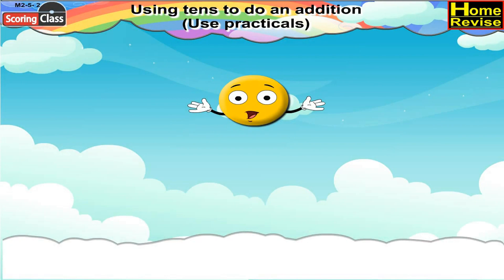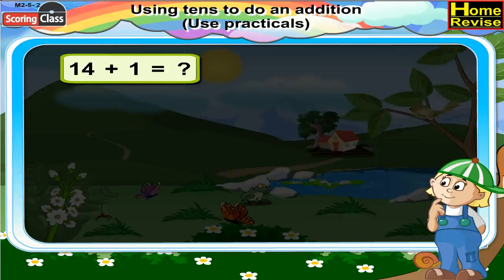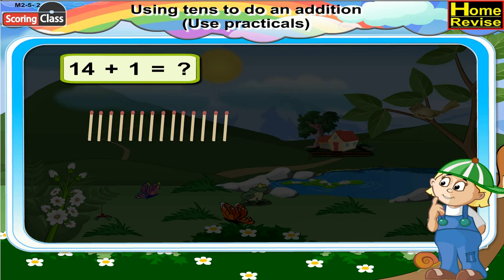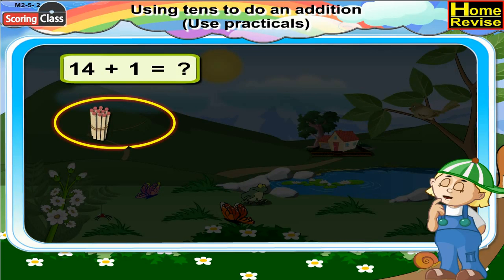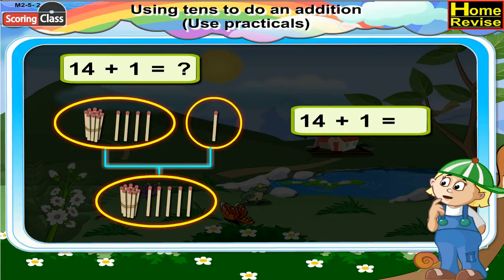Using 10s to do an addition. 14 plus 1 is equal to how many? Let us take 14 matchsticks. First, let us make a bundle of 10 matchsticks — that is a 10 — and we have 4 more matchsticks, so that makes it 14. Now if we add 1 more matchstick to it, it becomes 15.